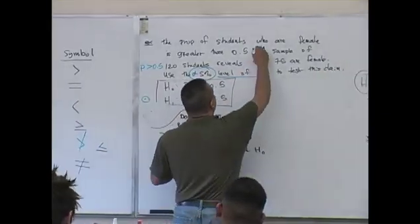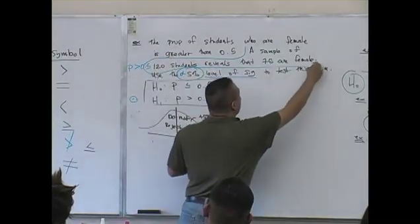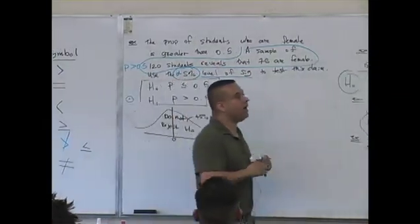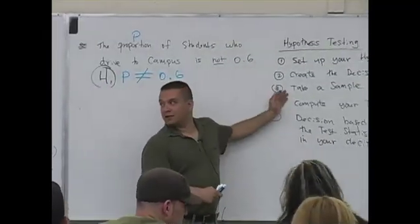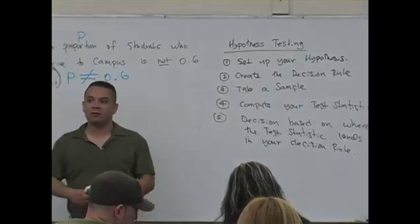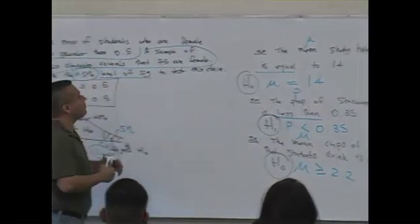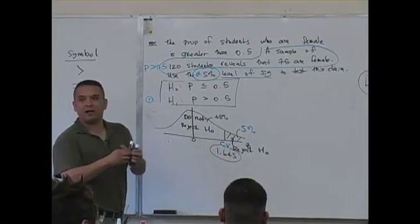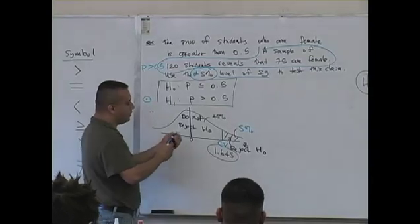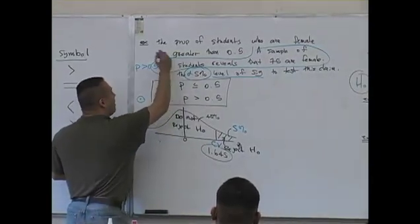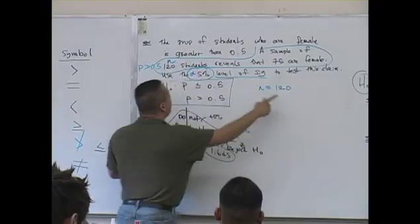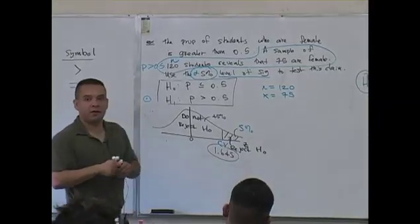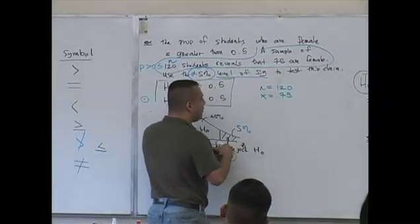What are they saying to you here? What does this portion of information say to you? That's your sample information. In real life, you would have to go out and take a sample. We don't have time to go out and take a sample, so they're going to give you that information. A sample of 120 students reveals that 75 are female. So 120 represents sample size. N is 120. That's your number of successes, 75.